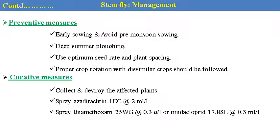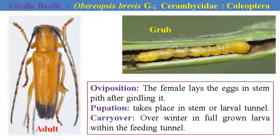Deep summer plowing should be done to disturb the soil and reduce carryover stress. Use optimal seed rate and plant spacing to minimize losses. Proper crop rotation with a dissimilar crop should be followed. Alternate hosts can be removed from the crop cycle. Curative measure: collect and destroy the affected plant parts. Apply 5% Neem Seed Kernel Extract (NSKE) or other actives — 1% EC at the rate of 2 ml per litre can be sprayed in the field. Spray of thiamethoxam (brand name Actara) 25 WG granules at 0.3 ml per litre of water, or imidacloprid 17.8 SL at the rate of 0.3 ml per litre.